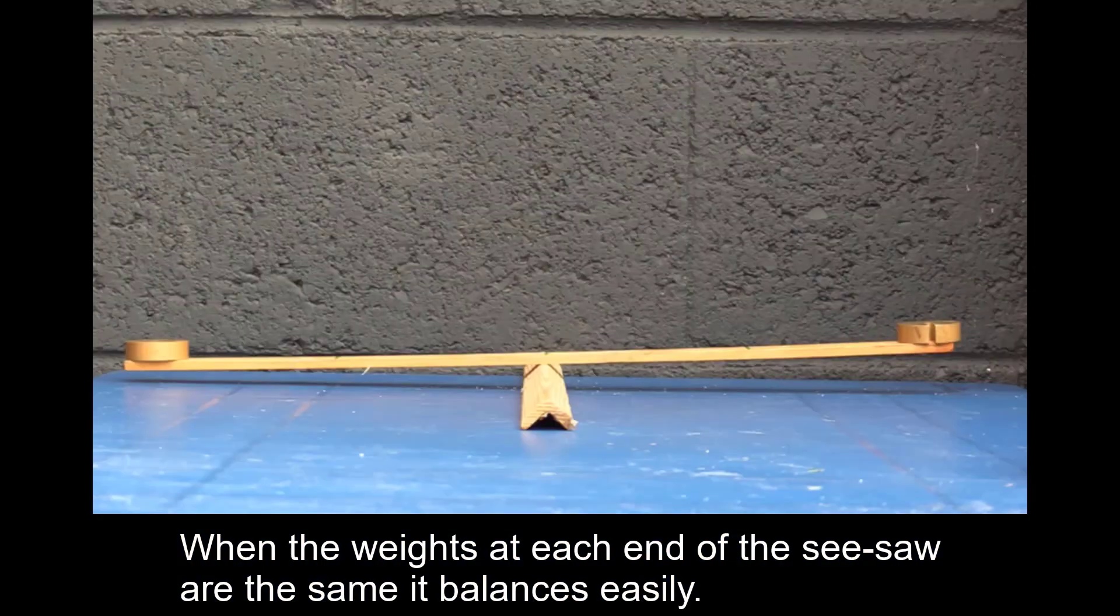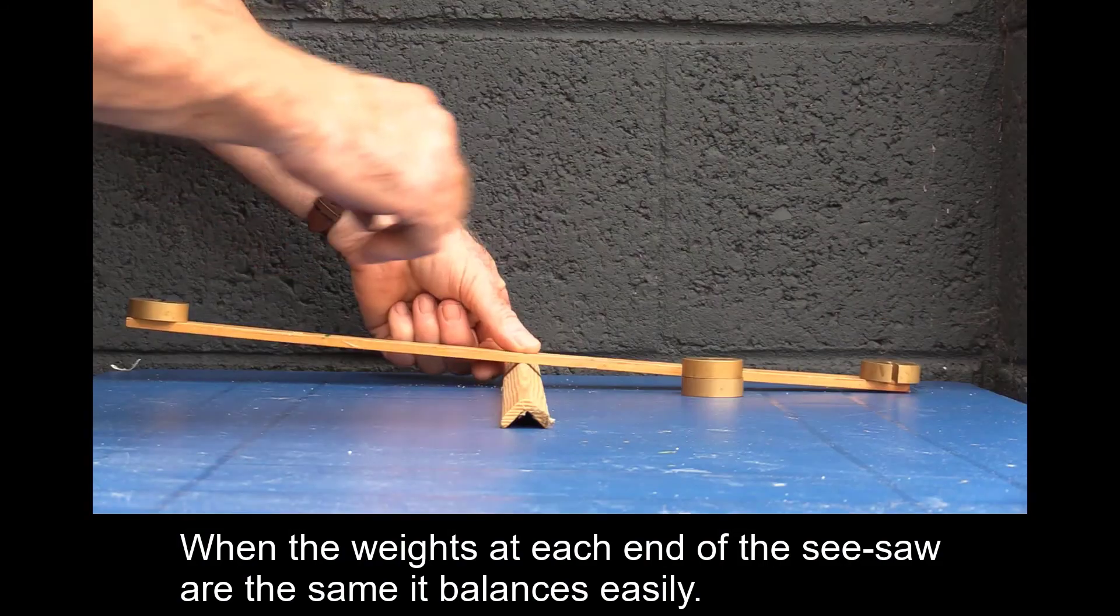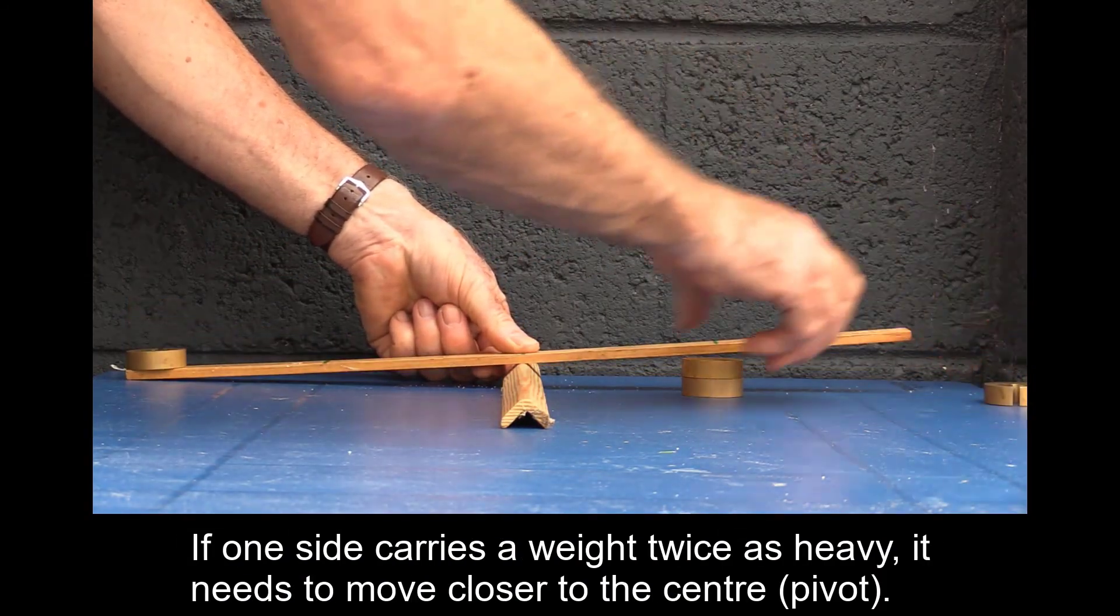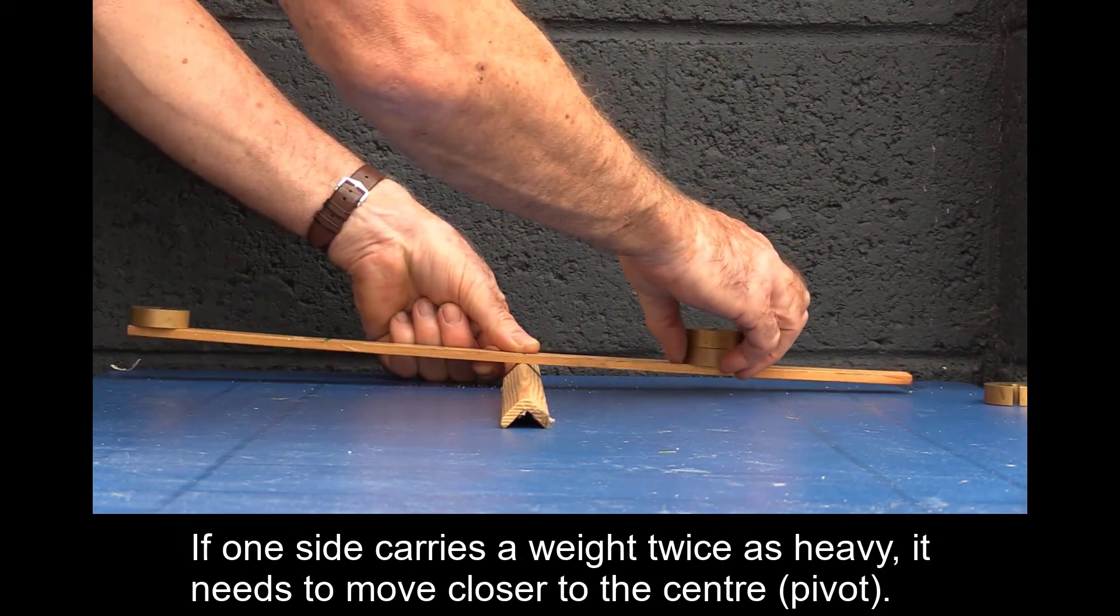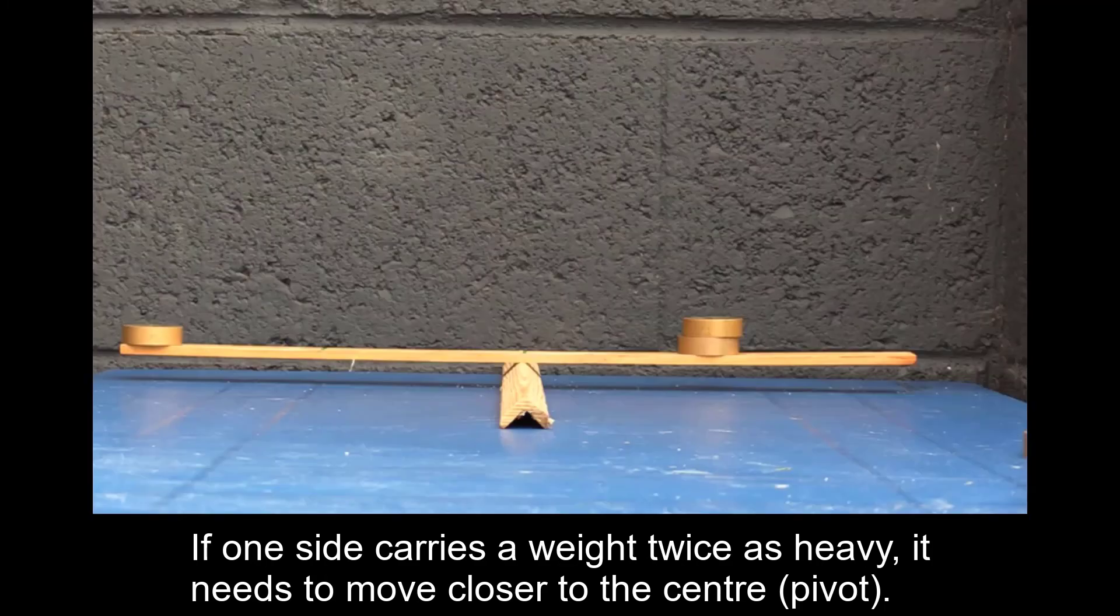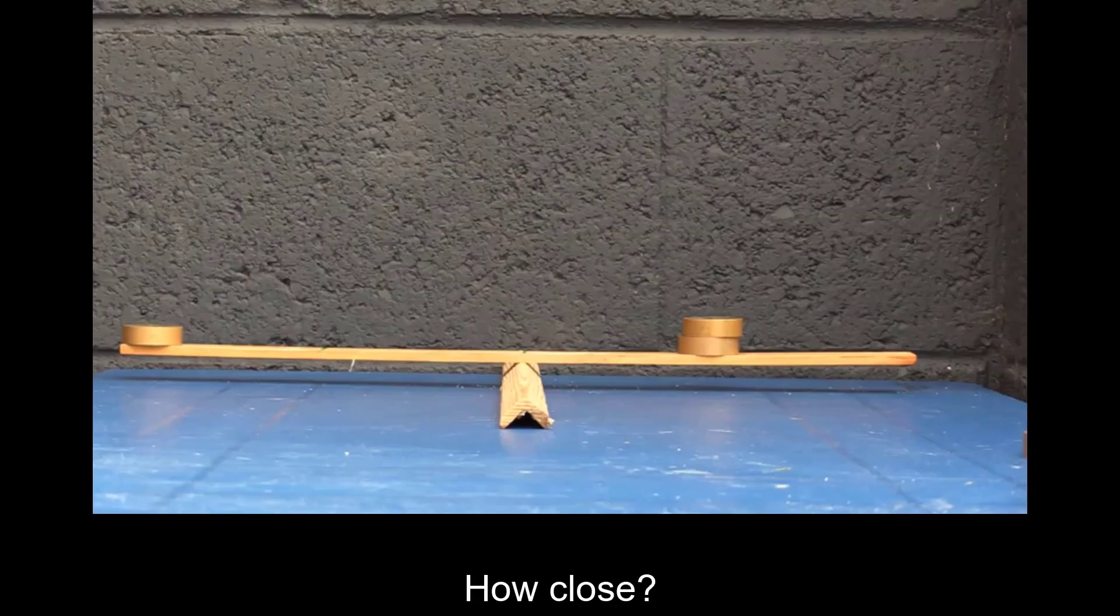When the weights at each end of the seesaw are the same, it balances easily. If one side carries a weight twice as heavy, it needs to move closer to the center or pivot. How close? About halfway.